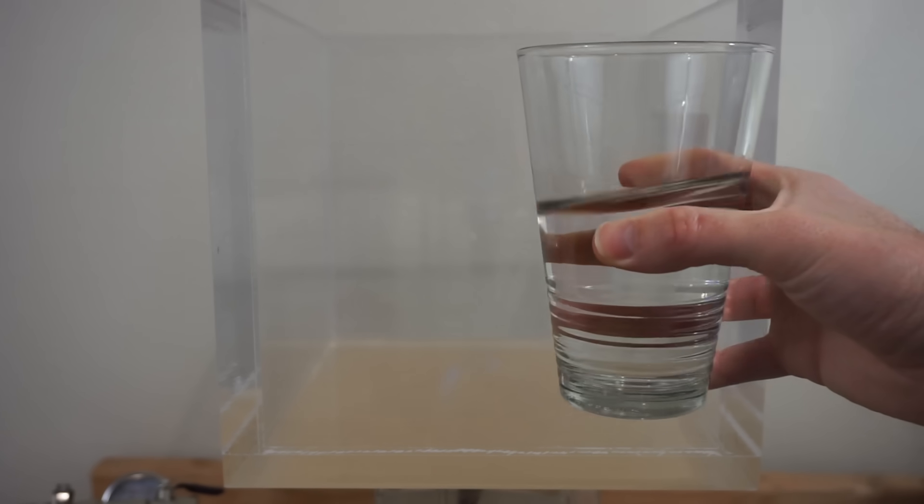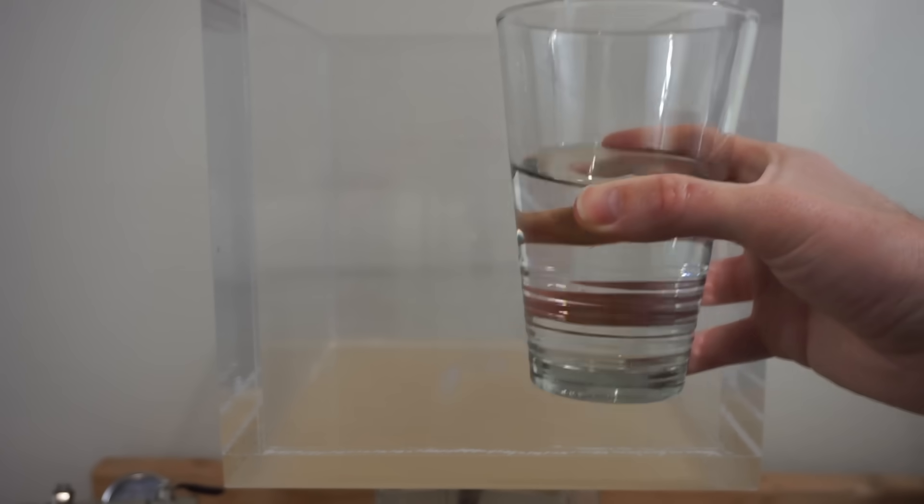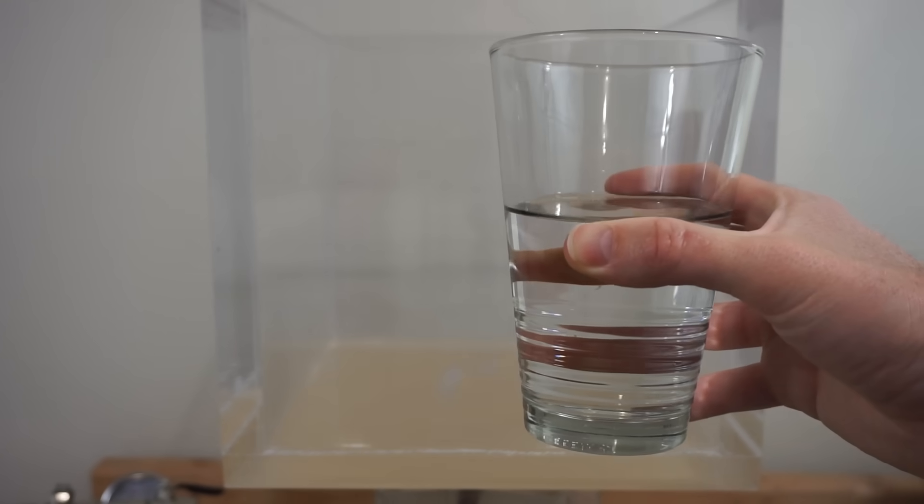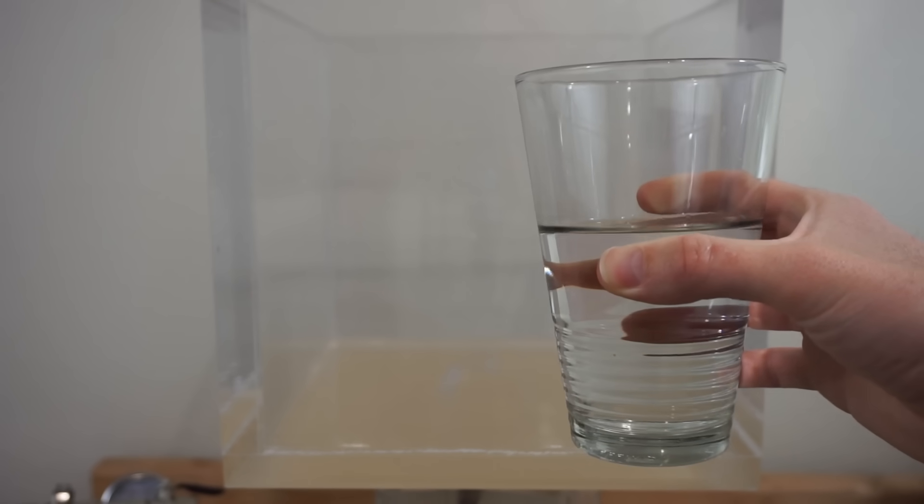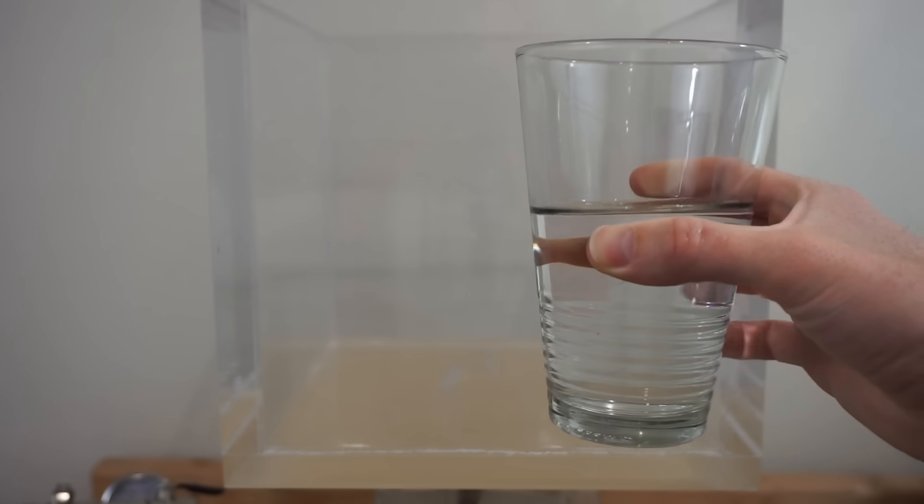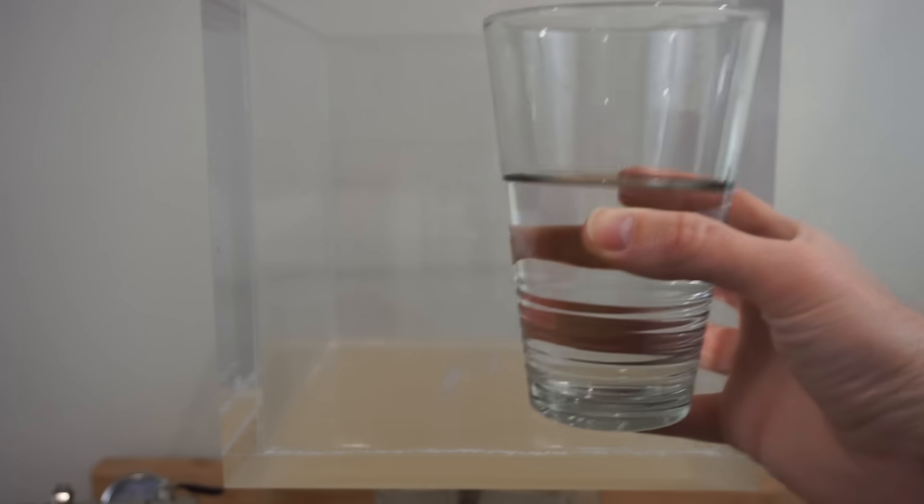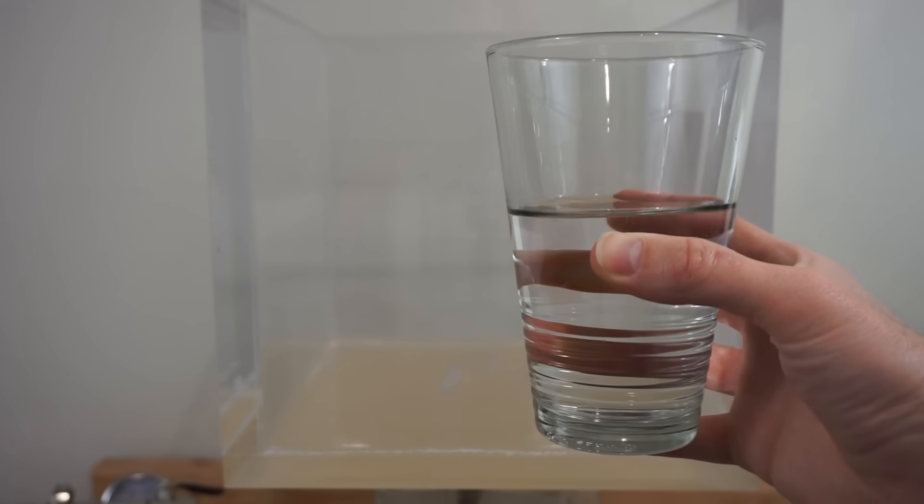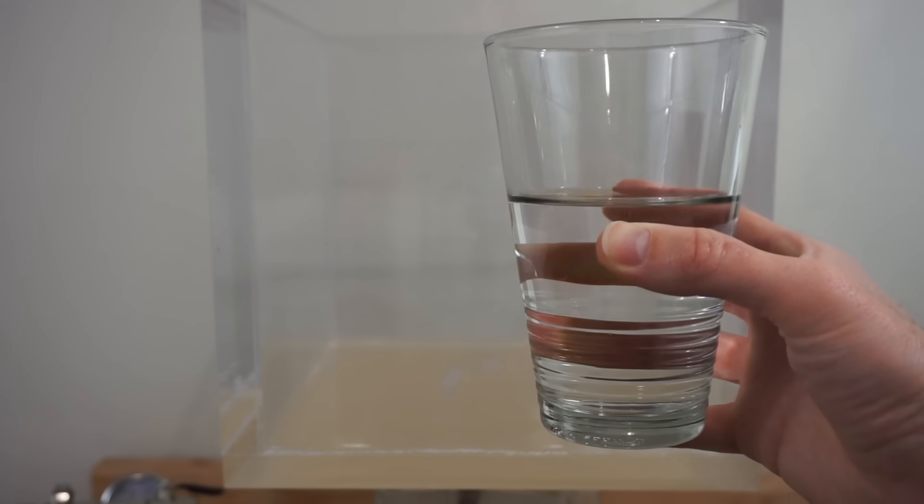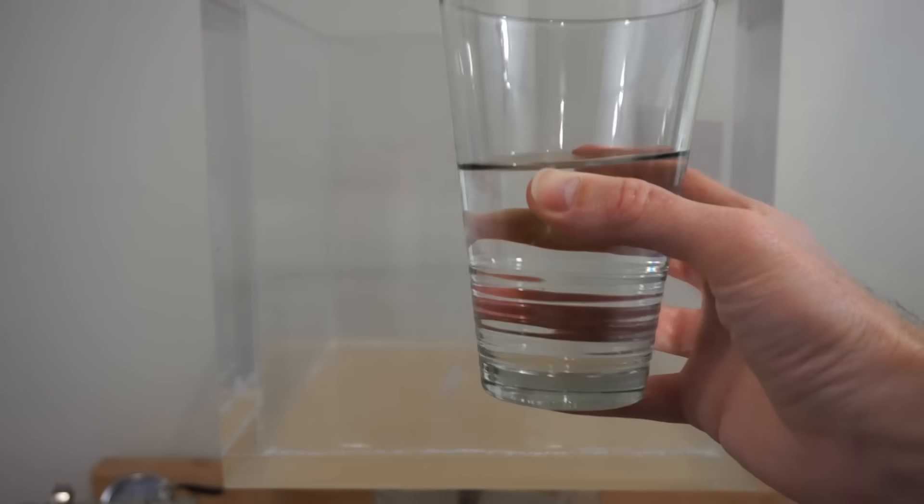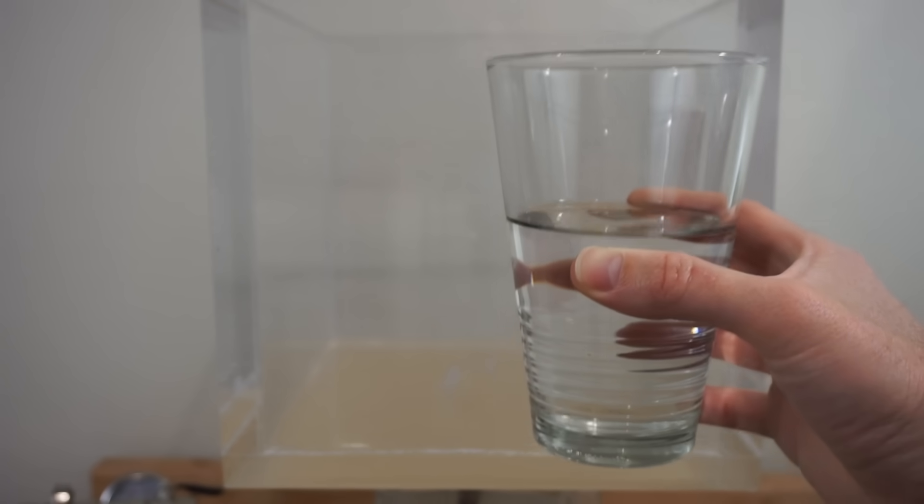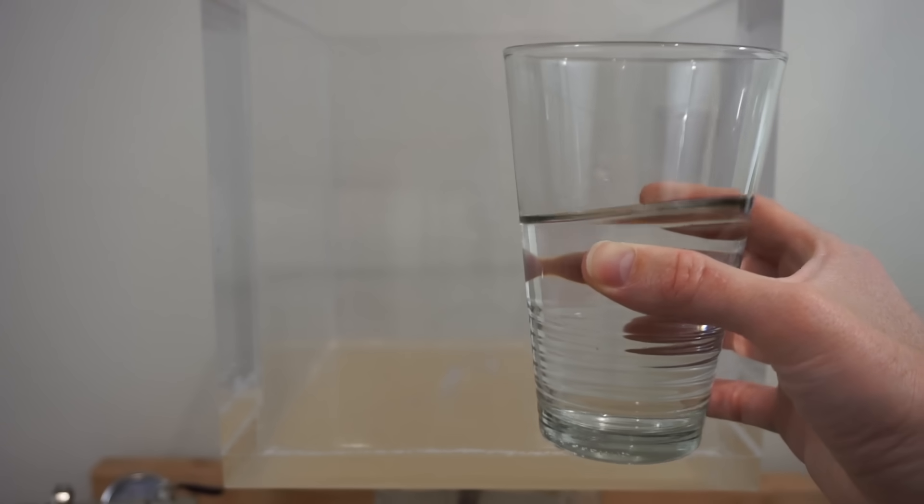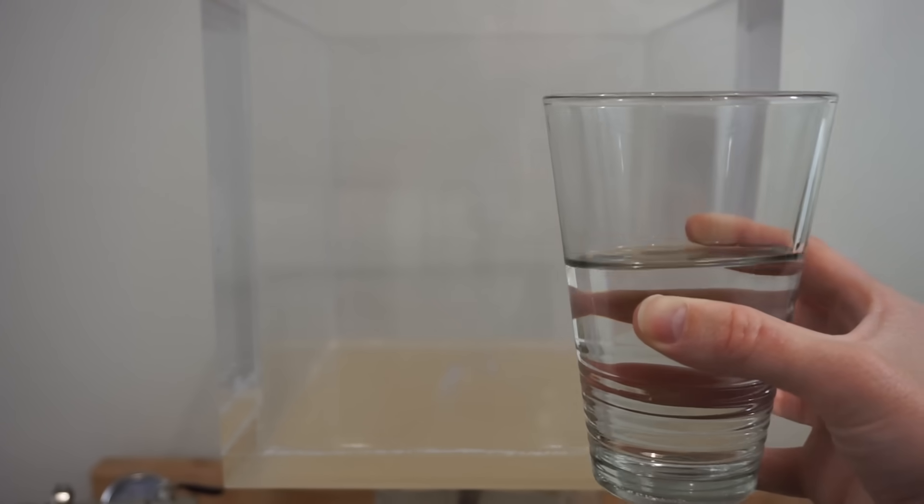So the first thing to understand about water boiling, and you might know this if you've ever done any cooking, you know that at different elevations water boils at different temperatures. So there's no set temperature that water boils at, it depends on what pressure you're at. So for example at sea level on the coast, water is going to boil at about 100 degrees Celsius or 212 degrees Fahrenheit.